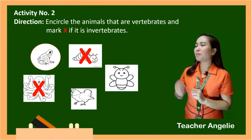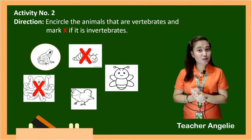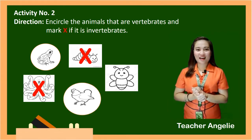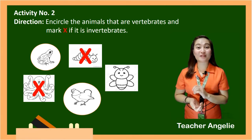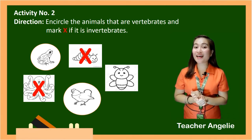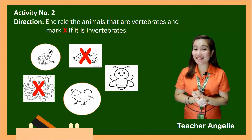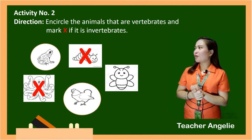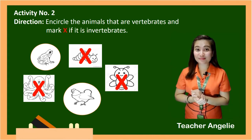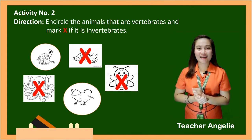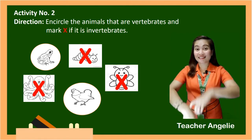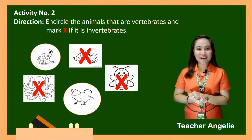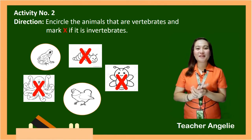And how about the chicken? Yes, encircle the chicken because the chicken has a backbone, and it is vertebrates. And how about the bee? Yes, the bee is X because it is invertebrates.